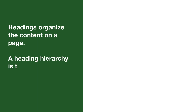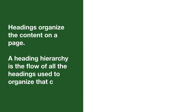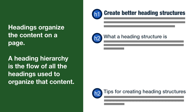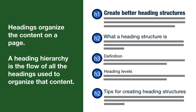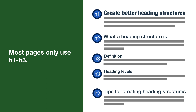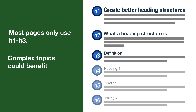Headings organize the content on a page. A heading hierarchy, or heading structure, is the flow of all the headings used to organize that content. Most heading structures should start with a heading 1 and only use one H1 on the page. From there, heading 2s organize the main points that go with the heading 1. Under H2s, heading 3s can organize main points that go with the H2 underneath. There are heading 4s, 5s, and 6s, but most pages only use H1 through H3. More complex topics could benefit from additional heading levels, though.